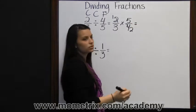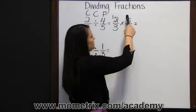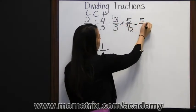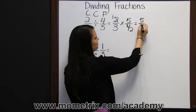Now we just multiply across. One times five is five, and three times two is six.